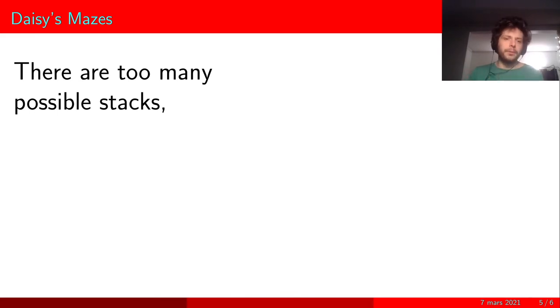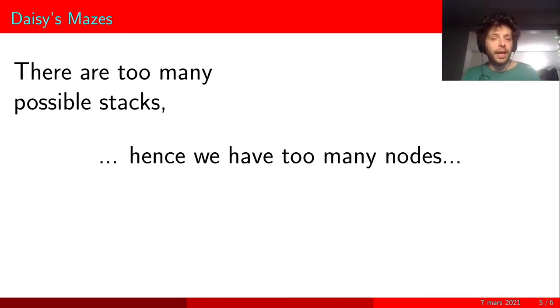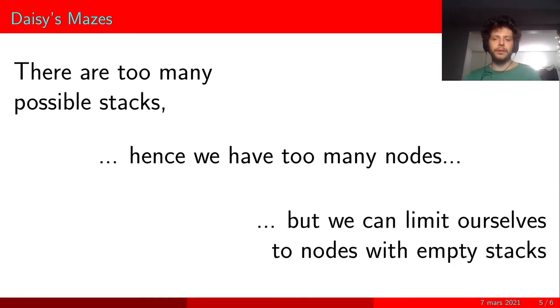However, there are too many possible stacks, and in the middle of a path, we don't know that the stack is very small, contrary to what we did at the beginning and the end. Hence, we have too many nodes in our graph of configurations, so we need a new trick to limit the nodes.